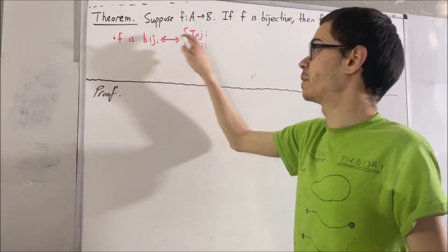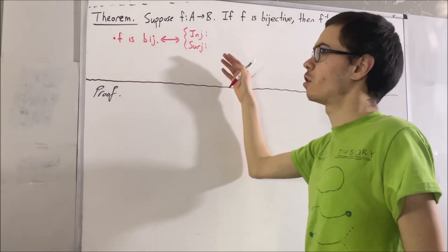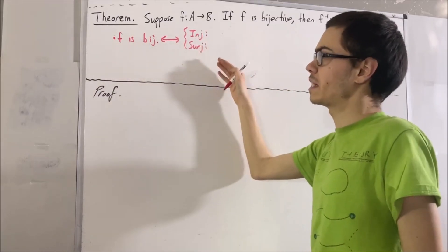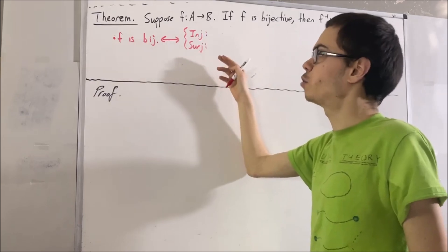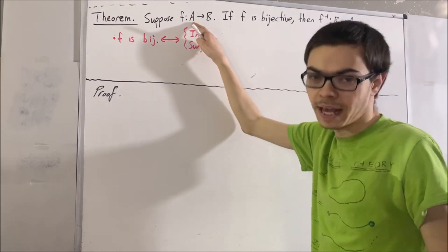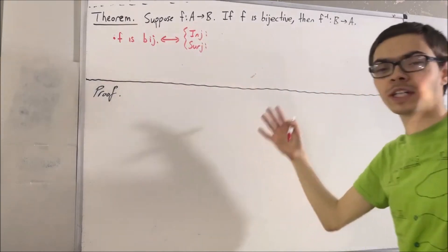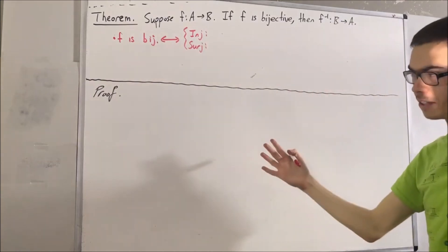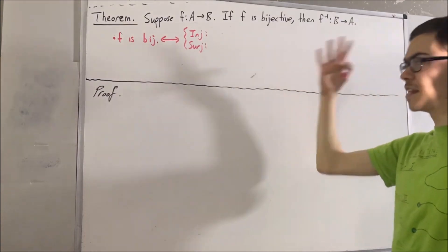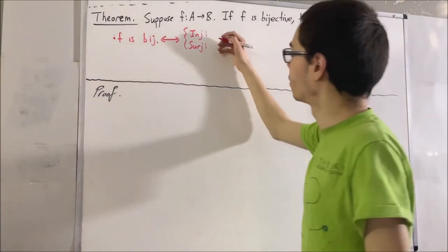What does it mean for f to be injective? Well, if you recall, all that means is that for every two elements a1 and a2 in A, if f(a1) equals f(a2), then a1 equals a2.